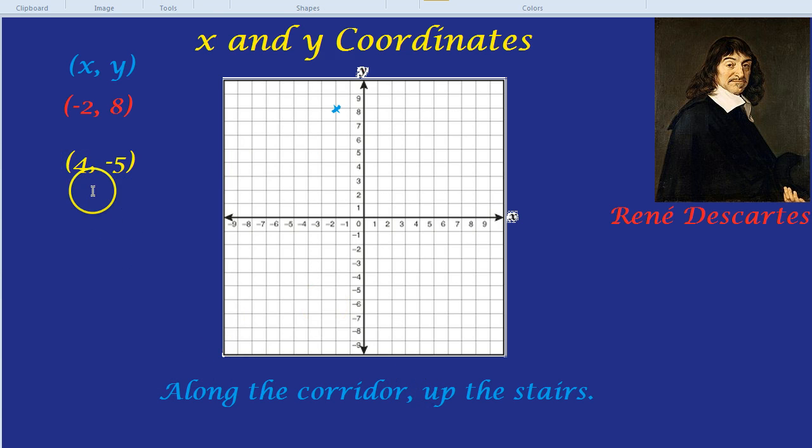Along the corridor, up the stairs. Okay, so I'll remember that the first number is the x-coordinate. So 4 along the x corridor. Okay, let's look. 4 along the x corridor. Well, 1, 2, 3, 4. Okay, I think I found it.